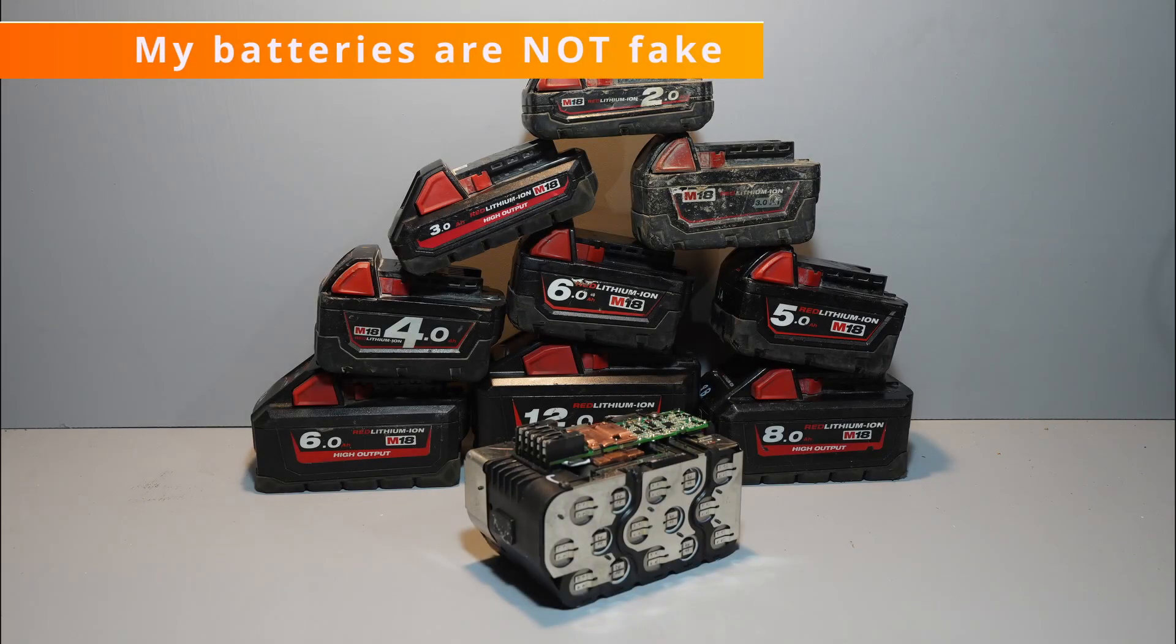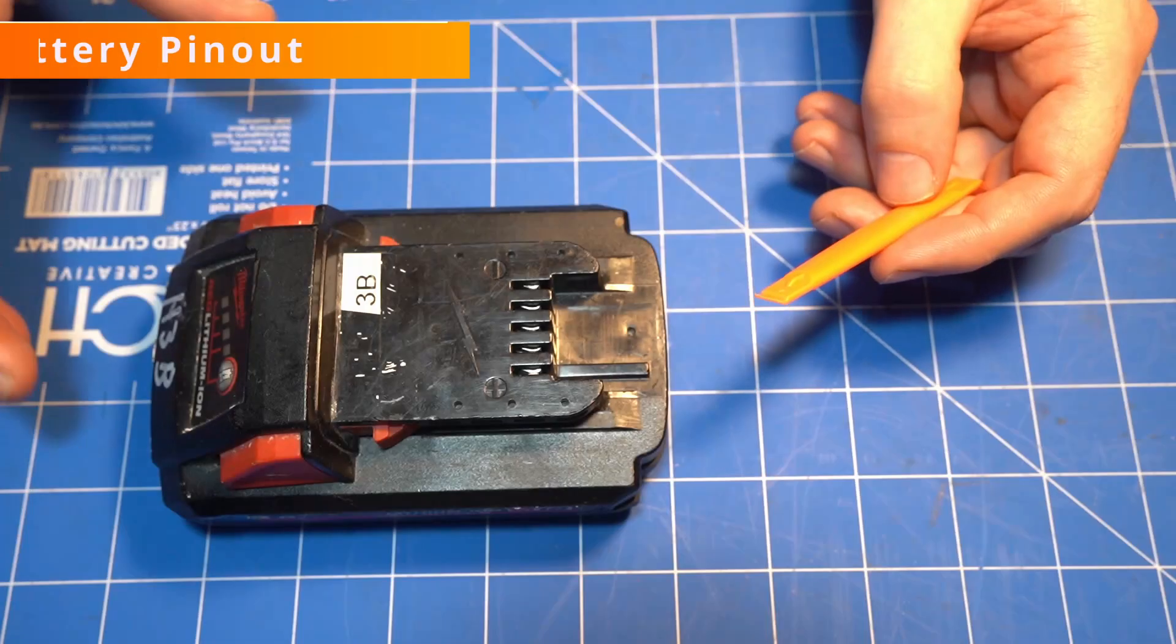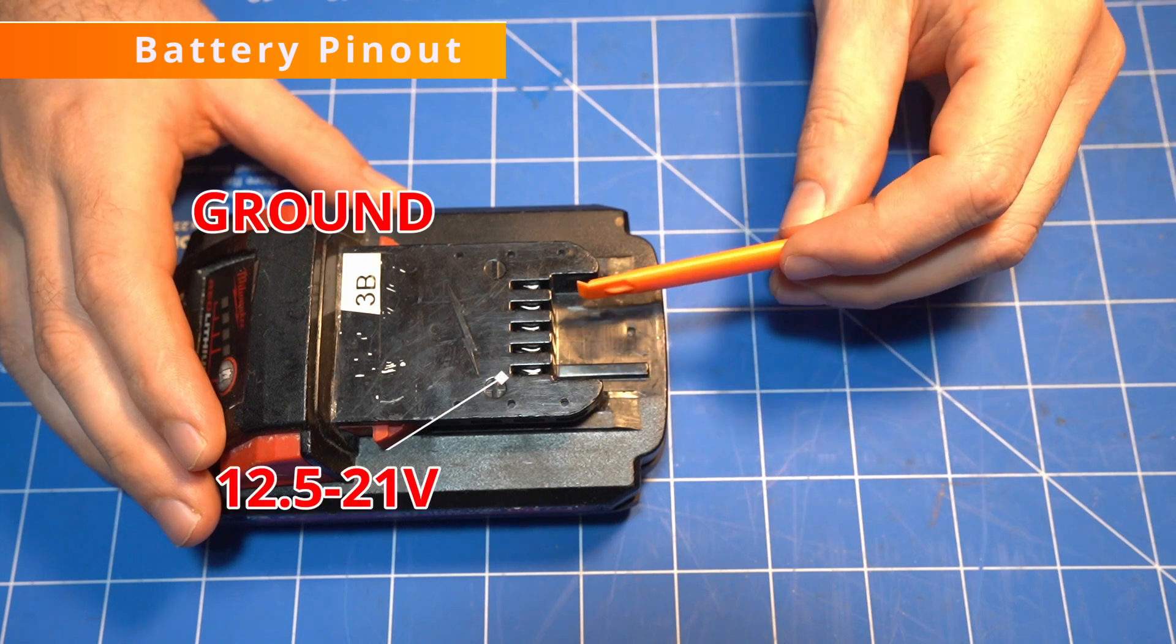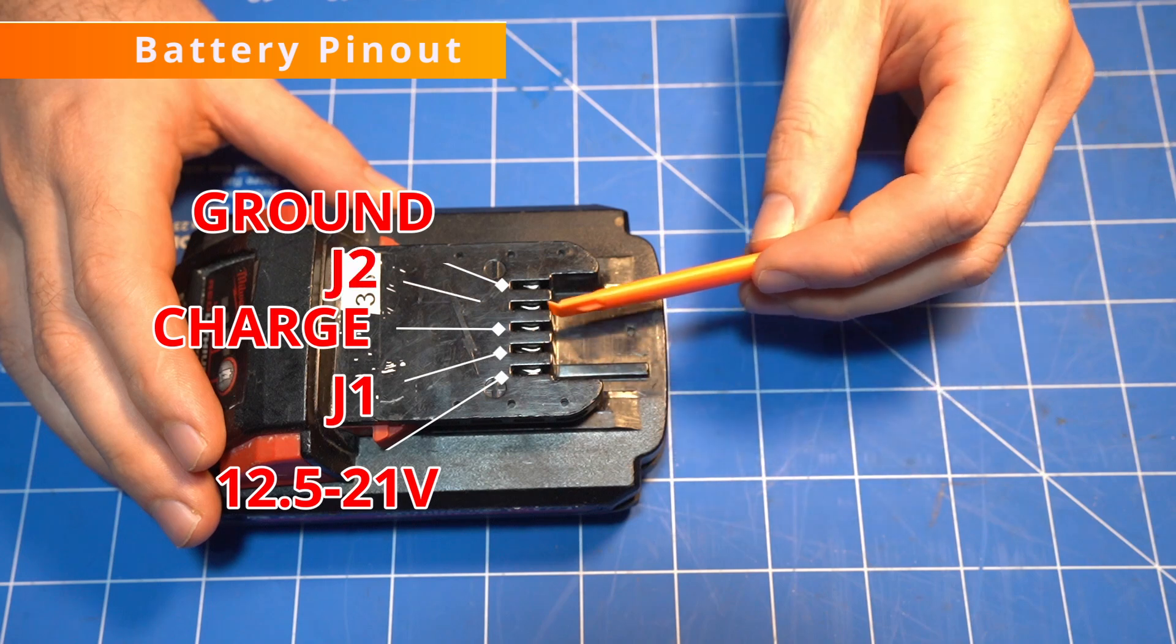First up, these batteries are genuine Milwaukee M18 batteries. Milwaukee just uses different stickers and product codes outside of the Americas. M18 batteries have five pins: the two main power pins on the outside, a charging pin in the middle, and two other pins labeled J1 and J2.